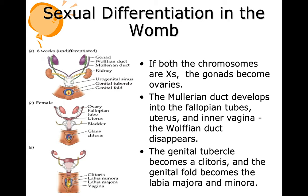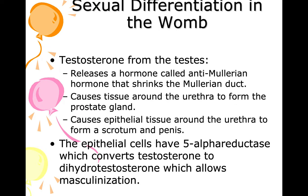If both chromosomes are Xs, the gonads become ovaries. The Müllerian duct develops into the fallopian tubes, uterus, and inner vagina, while the Wolffian duct disappears. The genital tubercle becomes a clitoris, and the genital fold becomes the labia majora and labia minora. Testosterone from the testes also releases anti-Müllerian hormone, which shrinks the Müllerian duct, causes tissue around the urethra to form a prostate gland, and causes epithelial tissue to form a scrotum and penis. The epithelial cells have 5-alpha reductase, which converts testosterone to dihydrotestosterone, allowing masculinization.